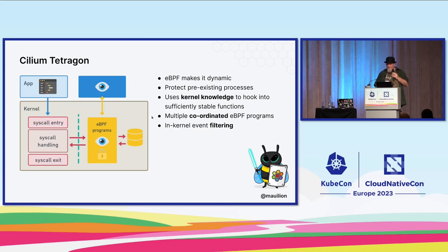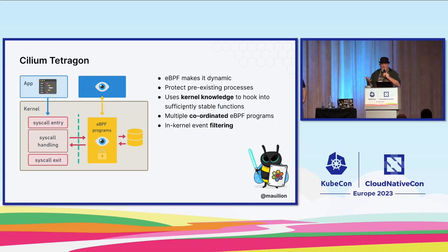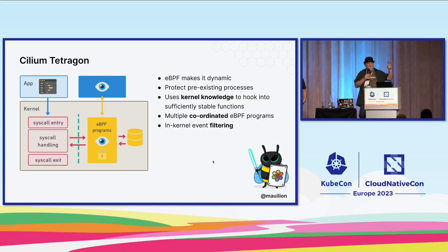Tetragon protects pre-existing processes, uses kernel knowledge to hook into sufficiently stable functions, and can handle multiple coordinated eBPF programs. You can actually take action — when we see an event we want to trigger on, we decide what actions we want to have happen. There is also in-kernel event filtering. When you're looking at the amount of event data we can produce, it can be a lot. The question often comes: how can I limit how much information I'm actually going to get out of that so I can only target the things I care about and send that to Splunk?